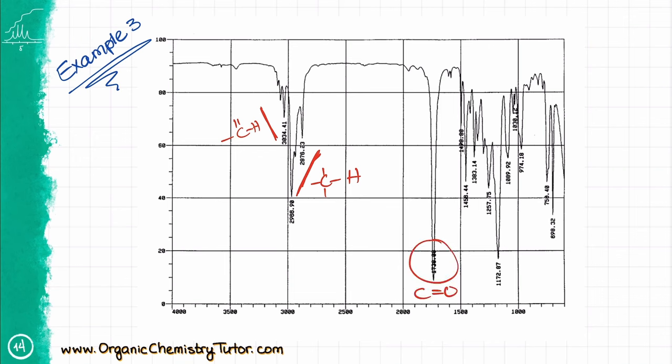I'm also seeing a carbonyl at 1730, and there is also a tiny signal over here for the carbon-carbon aromatic bond. Based on this data, we can conclude that this is likely an aromatic ketone or other type of a carbonyl.